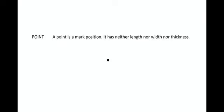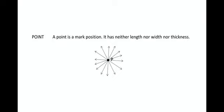A dot represents a point, and a letter P also represents a point. This P is a point, and a unique thing about this point is that an infinite number of lines can pass through the same point. So if there is a question — how many lines can pass through a given point — from a single given point, there are infinite number of lines which can pass through.